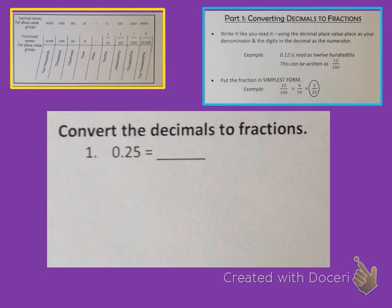So let's give these a try. Our first problem is 0.25. Well, we want to know what place value the 5 is in. And so if we look at our place value chart that's highlighted in the yellow box, I see that this is actually twenty-five hundredths. So we can write that as 25 over 100.